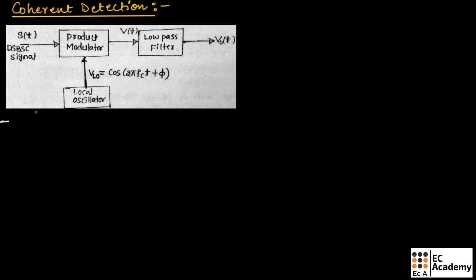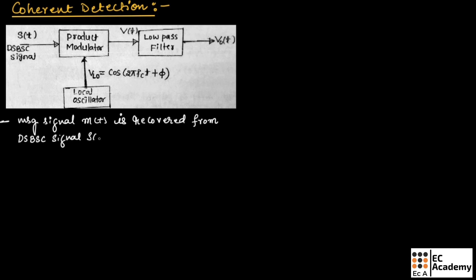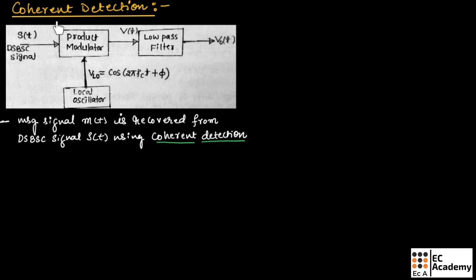The modulating signal or the message signal M of T is recovered from the DSBSC signal S of T using coherent detection. To recover the message signal from the modulated signal, we will use coherent detection.